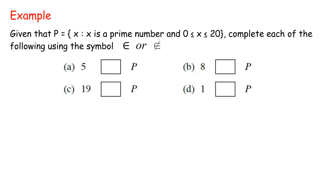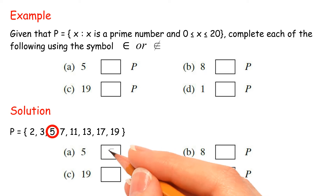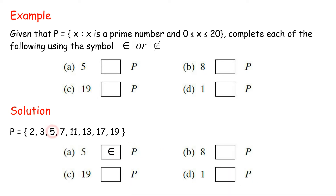Example: given that P = {x | x is a prime number and 0 ≤ x ≤ 20}, complete each of the following using the element symbol. Solution: P = {2, 3, 5, 7, 11, 13, 17, 19}. A: 5 is an element of P. B: 8 is not an element of P. C: 19 is an element of P. D: 1 is not an element of P.